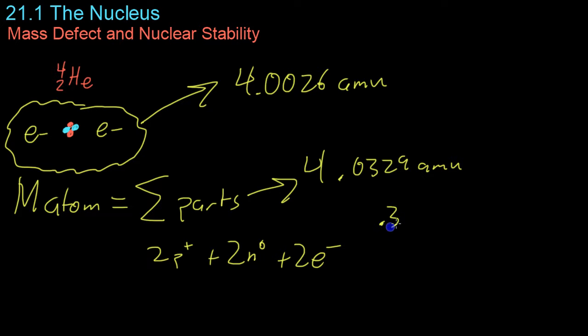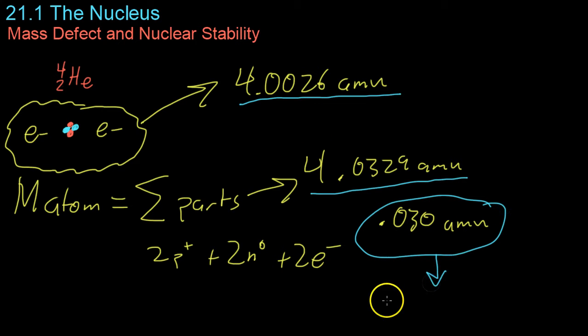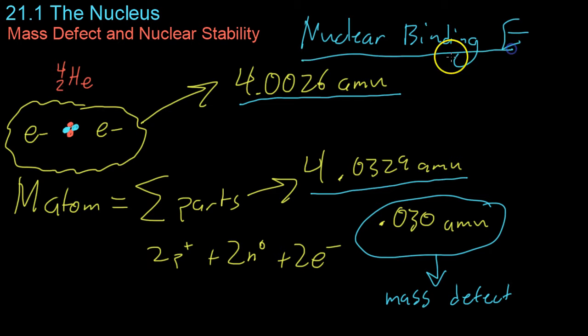And this is not a small difference. This is a 0.030 amu difference. And this difference between the expected value, that is, the sum of its parts that comprise it, and the total mass of the atom, that 0.030, is what is known as the mass defect. And the mass defect is very helpful in determining the nuclear binding energy. And this is the energy that was released in the creation of this nucleus. Likewise, it is the energy required, then, to destroy the nucleus, that is, to send all the constituent parts flying away from one another.